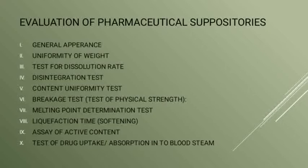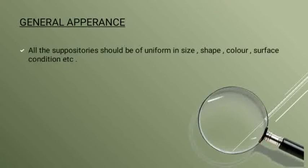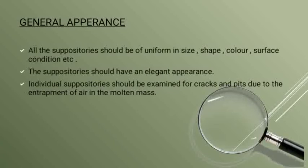Now we'll see all these tests one by one, starting with general appearance. This test is generally done using our own sense organs like visual inspection. All suppositories should be uniform in terms of their size, shape, color, and surface condition. The suppositories should have an elegant appearance, and individual suppositories should be examined for cracks and pits that may be present due to the entrapment of air in the molten mass.